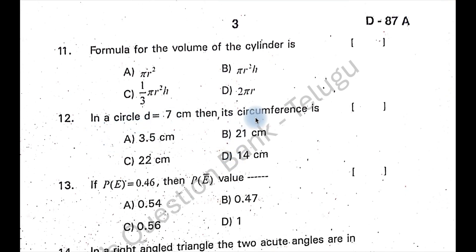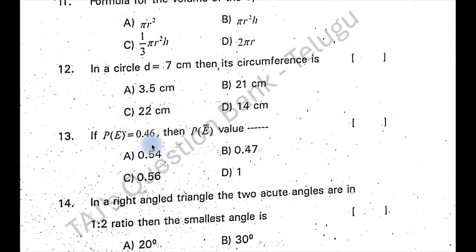Formula for volume of cylinder is pi r square h, option B. In a circle d is equal to 7, then the circumference is pi d, so 22 by 7 into 7 is 22 centimeter, option C. If p of e is 0.46, p of e dash is 0.54. 1 minus 0.46 is 0.54, option A.